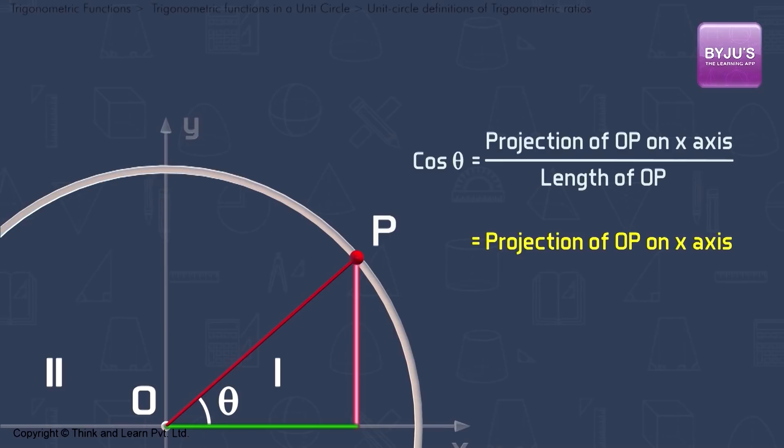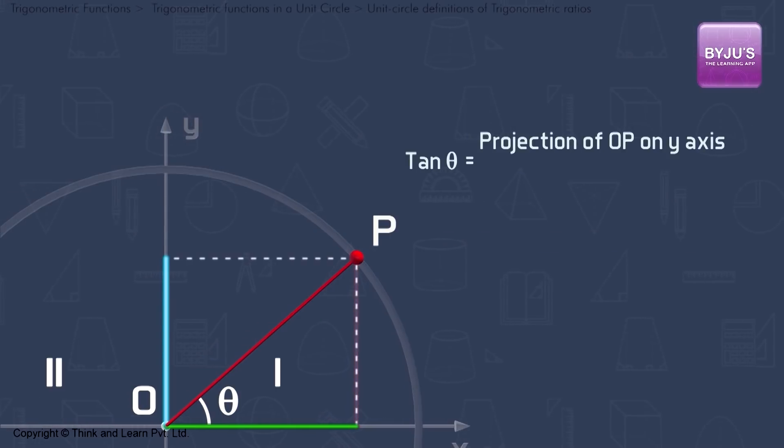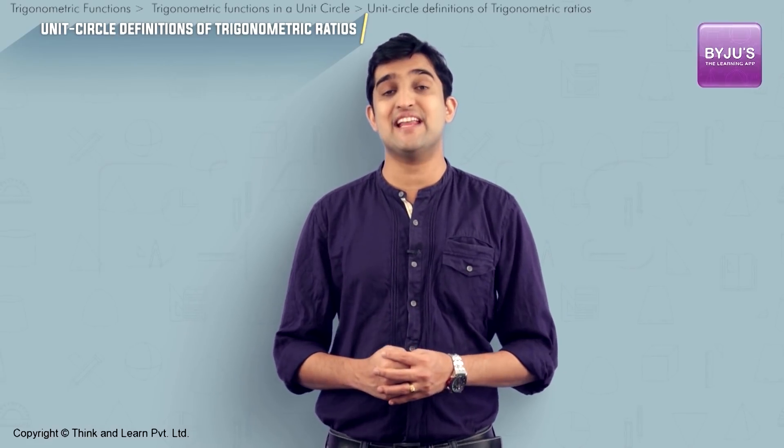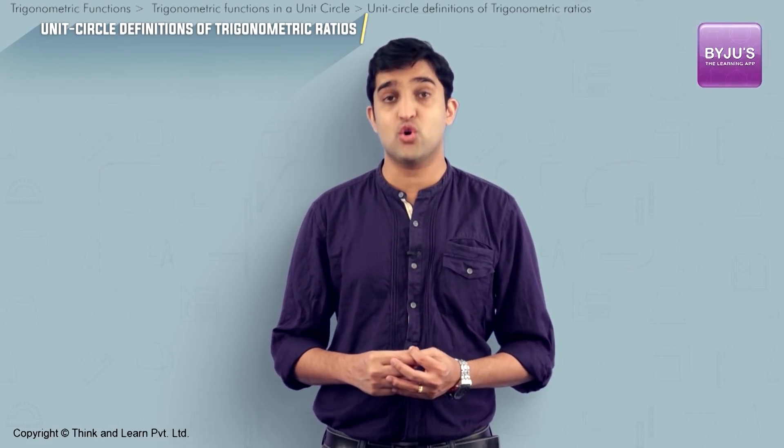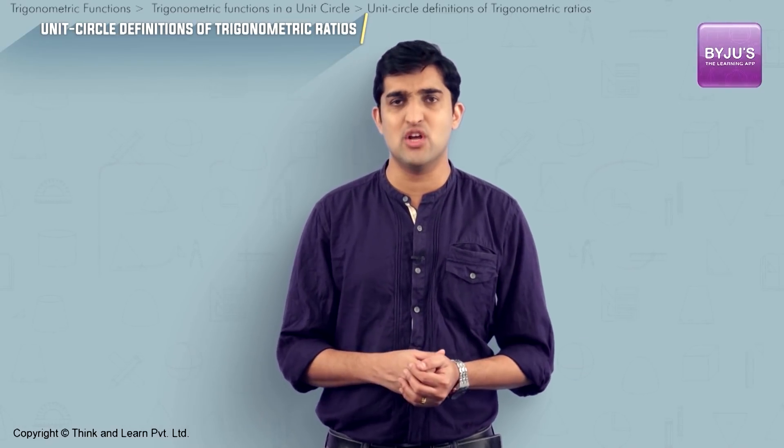So in terms of our new definition, tan θ can be written as projection of OP on y-axis by projection of OP on x-axis. From the definitions of sine, cosine and tangent, we can also define cosecant, secant and cotangent, since these are nothing but reciprocal of the earlier trigonometric ratios: sin θ, cos θ and tan θ.